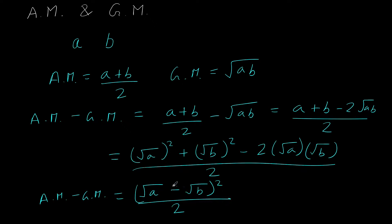Since (√A − √B)² is always greater than or equal to zero — it equals zero only when √A = √B, i.e., when A = B — this squared term is always non-negative. Therefore AM − GM ≥ 0, which means arithmetic mean is always greater than or equal to geometric mean.